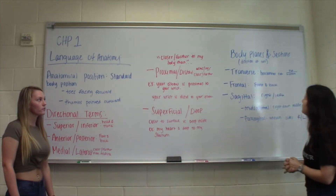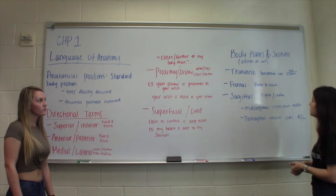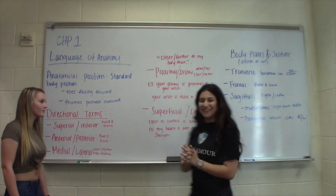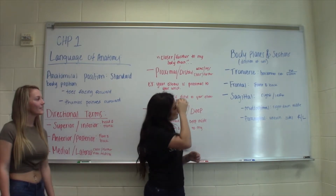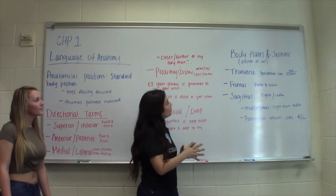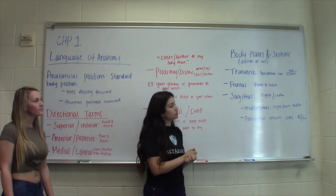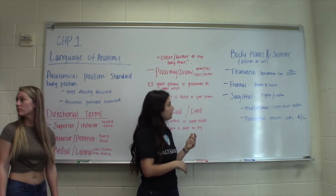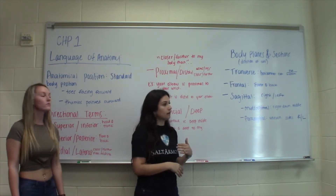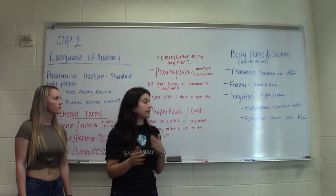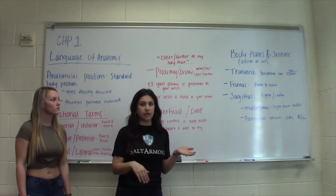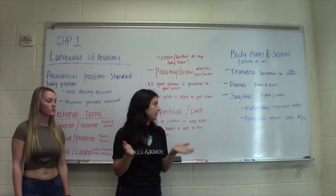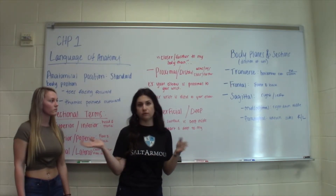Superficial is closer to the surface and deep is inside — for example, your heart is deep to your sternum. Body planes and sections refer to the directions of cuts. The transverse plane is a horizontal cut that divides you into top and bottom. The frontal plane divides front and back. The sagittal plane divides right and left — the midsagittal goes straight down the middle with equal portions on each side, while parasagittal cuts are uneven on the left and right.